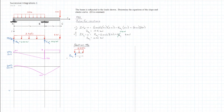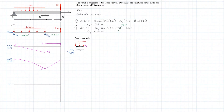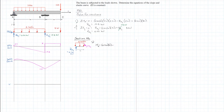R_AY is equal to 0.20 kilonewtons. We want to determine the internal moment at any point X from A to B. Using the direct method with clockwise positive, M(x) equals 0.2 kilonewtons times x minus 2 kilonewtons per meter times x times x over 2, which simplifies to negative x squared plus 0.2x.